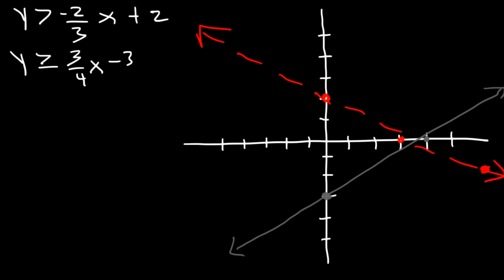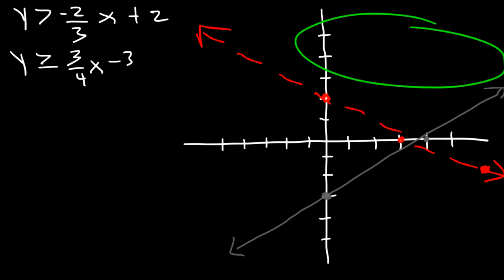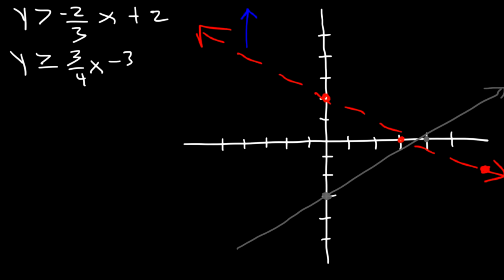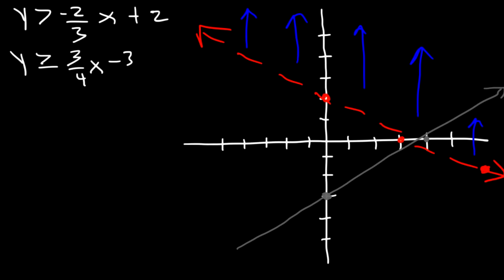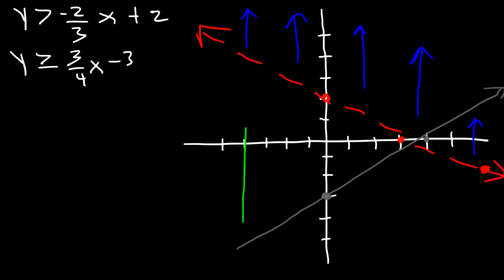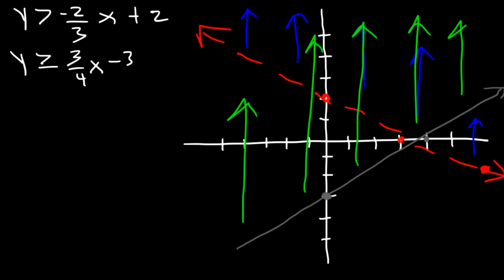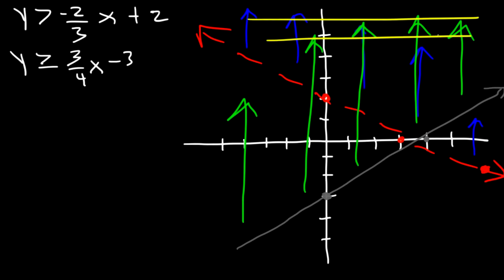Starting with the first function — the red line — y is greater than the function, so we shade above the red line, meaning it's either this region or the one above. For the second equation, y is greater than or equal to the gray function, so it's above the gray line as well. That eliminates one region, and the answer is the top region — where both shading conditions are satisfied.